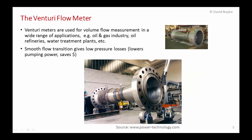Venturi flow meters are used in industry for measuring volume flow rates across a wide range of applications — the oil and gas industry, oil refineries, and water treatment plants. As you can see from the photo, they can be used for very large pipelines. The big advantage of a Venturi flow meter is that it has a very smooth flow transition, which results in very low losses, low turbulence, and very low pressure drops. That results in lower pumping power, saving money in the long run even though the device is more complex.